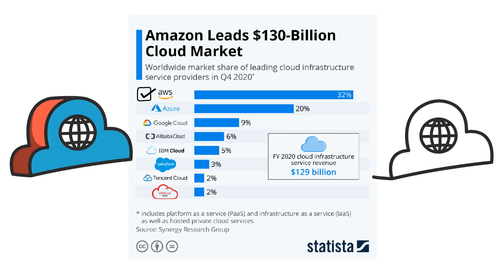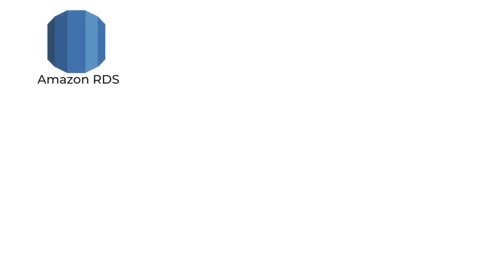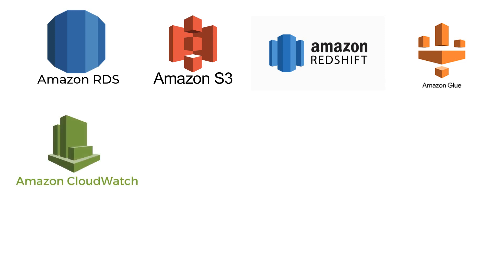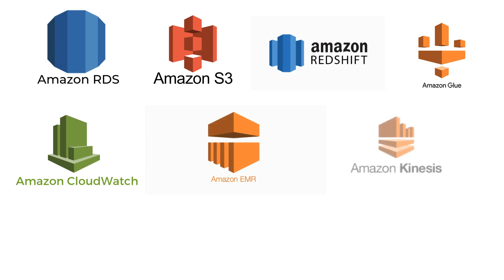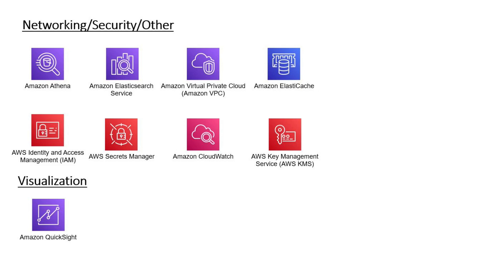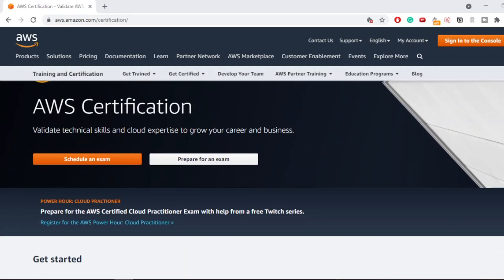These cloud service providers offer most of the services we talked about in the last video. To create a relational database, AWS has RDS (Relational Database Service). To store object data such as images or video, you can use AWS S3 (Simple Storage Service). For data warehousing it has AWS Redshift, for data transformation it has AWS Glue, and you can monitor your services using CloudWatch. To run large batch processing on Hadoop MapReduce or Spark, it has AWS EMR (Elastic MapReduce). For real-time processing it has AWS Kinesis. Most of these services are pay-per-use, so you only pay for the resources you use.